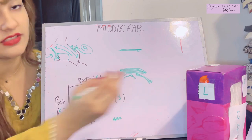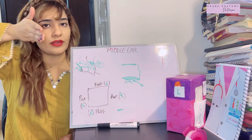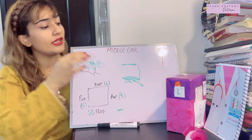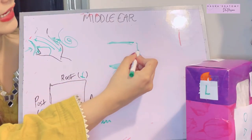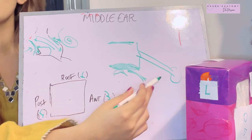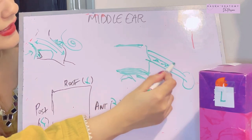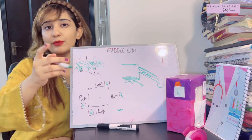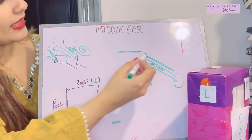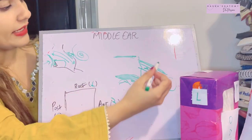The anterior wall has three contents. First, the auditory tube connects the middle ear cavity to the nasopharynx, opening in the lateral wall of the nasopharynx. Above it is the canal for the tensor tympani muscle — that muscle that keeps the tympanic membrane tense by maintaining it in a concavity.